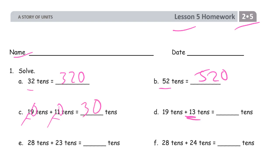And this 13 is 2 more than that 11, so we're going to have 32 tens. And then we're looking at 28 plus 23 tens. And that's going to be 51 tens.